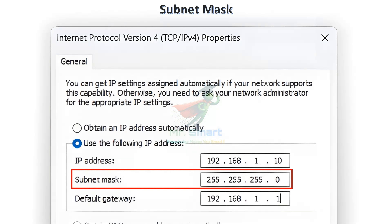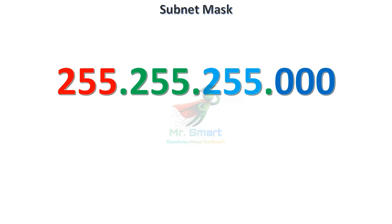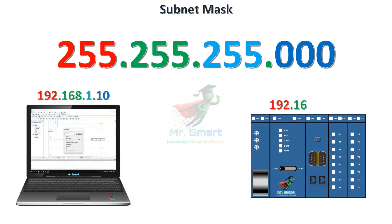The subnet mask decides which addresses are in your neighborhood and which ones are far away. For example, the subnet mask 255.255.255.0 means the first three octets are fixed and represent your neighborhood — that is, they belong to the same network. The last octet represents your house, that is, the specific device you are trying to connect to. This subnet mask allows two devices with the same first three octets but different last octet to communicate.